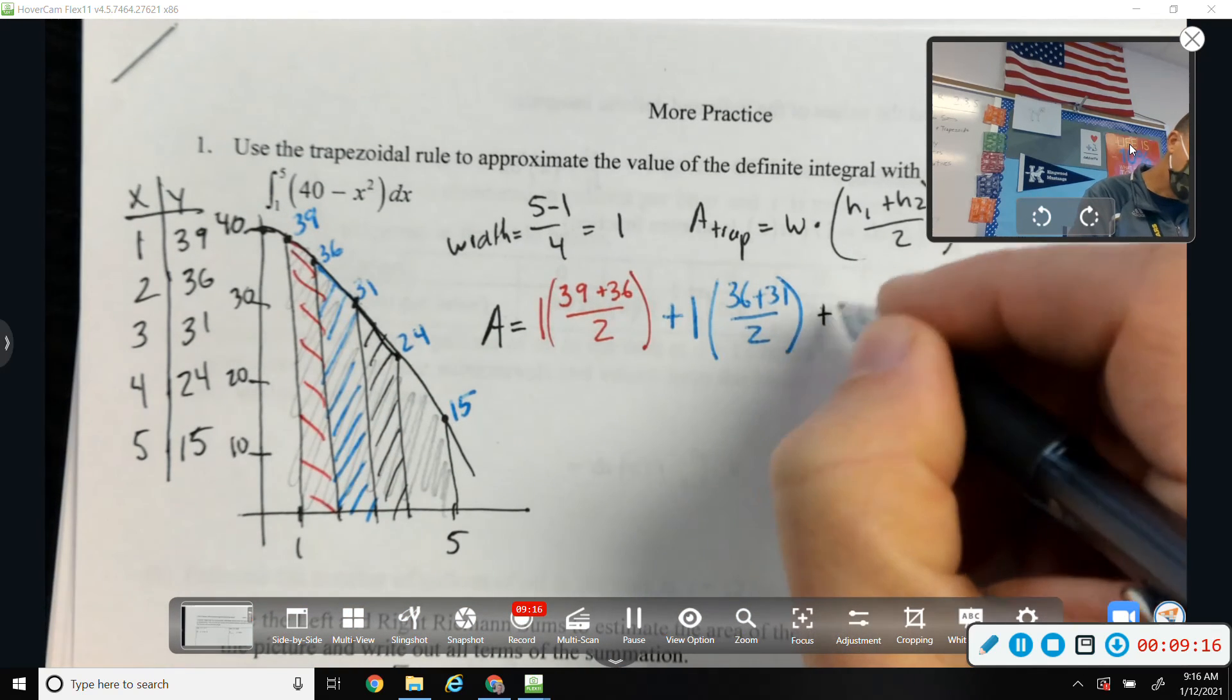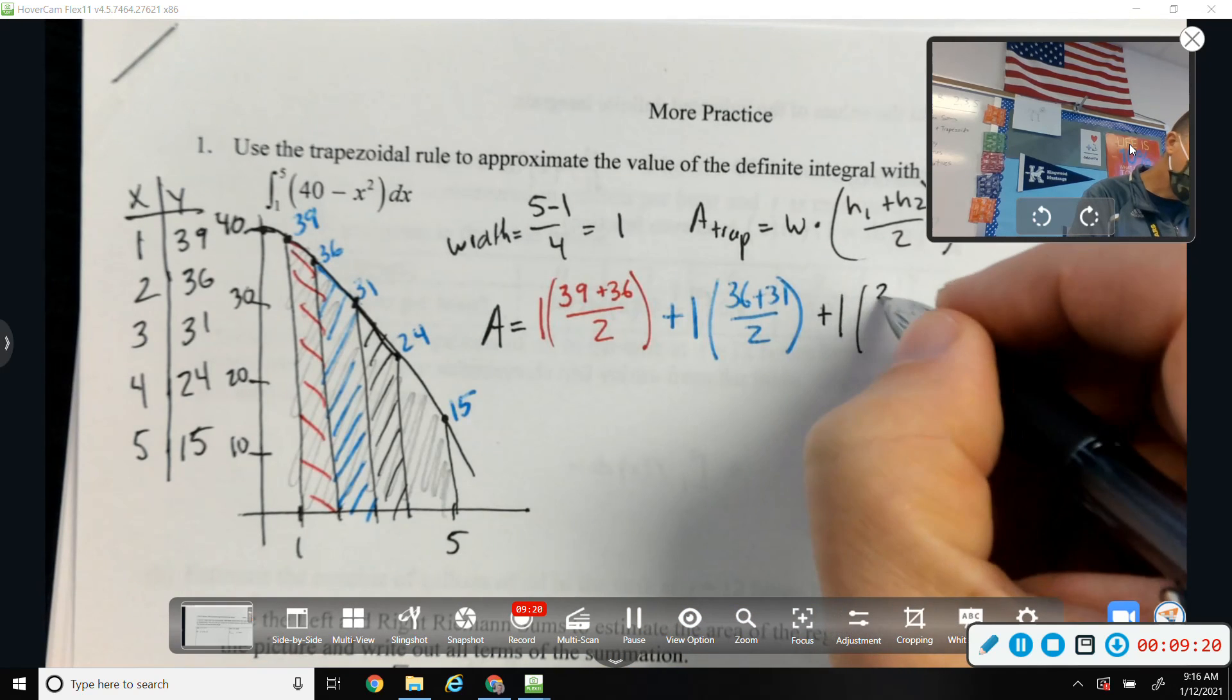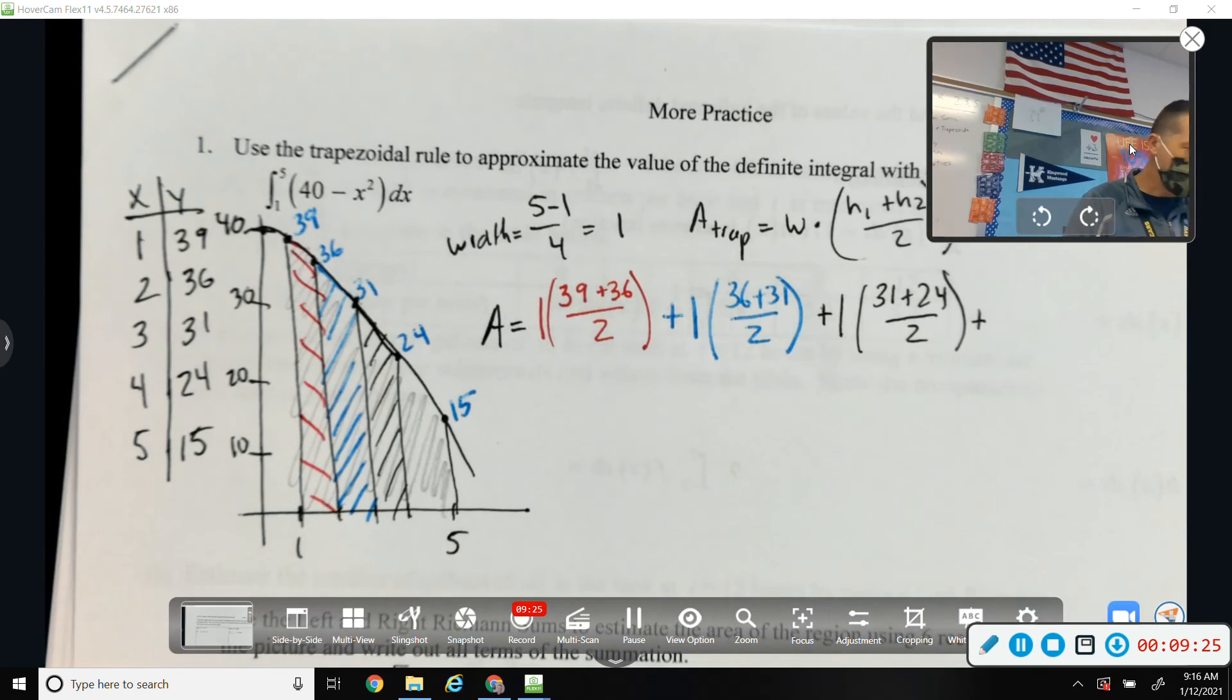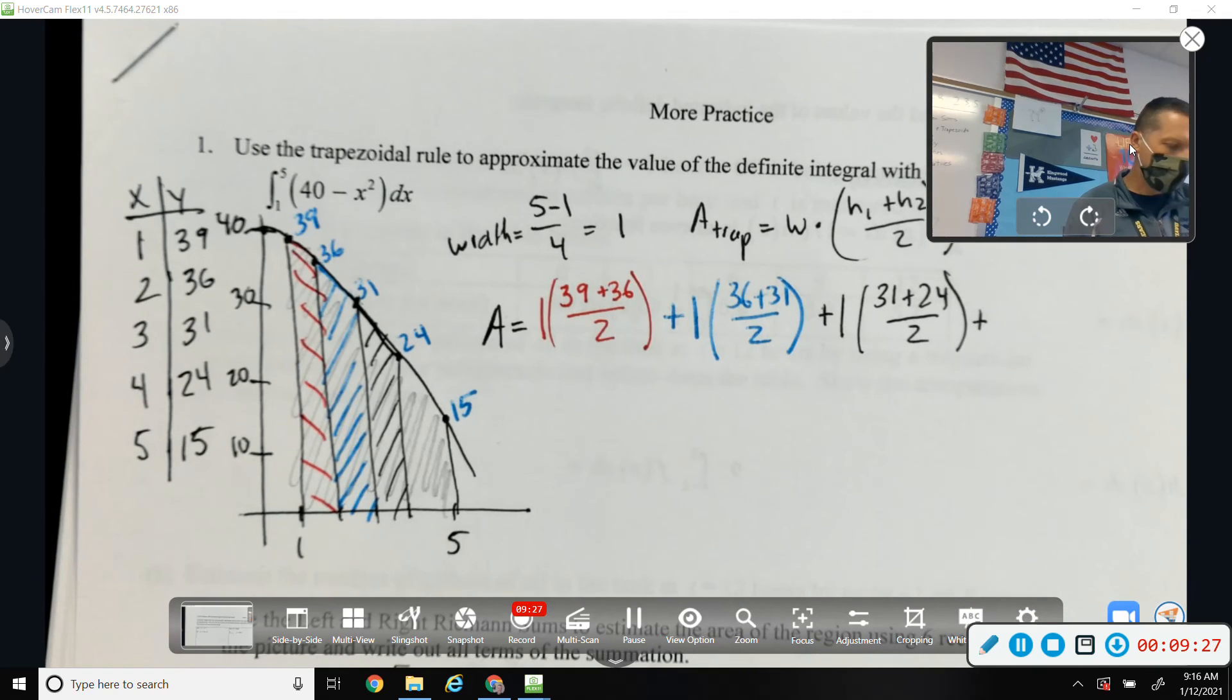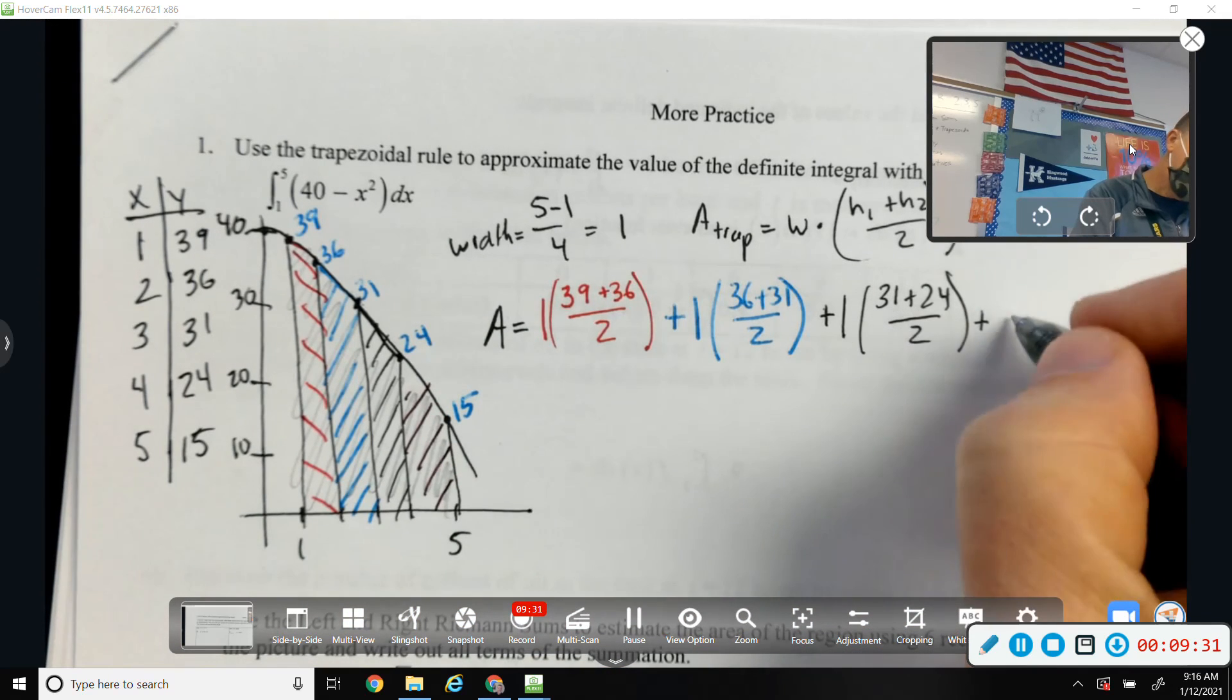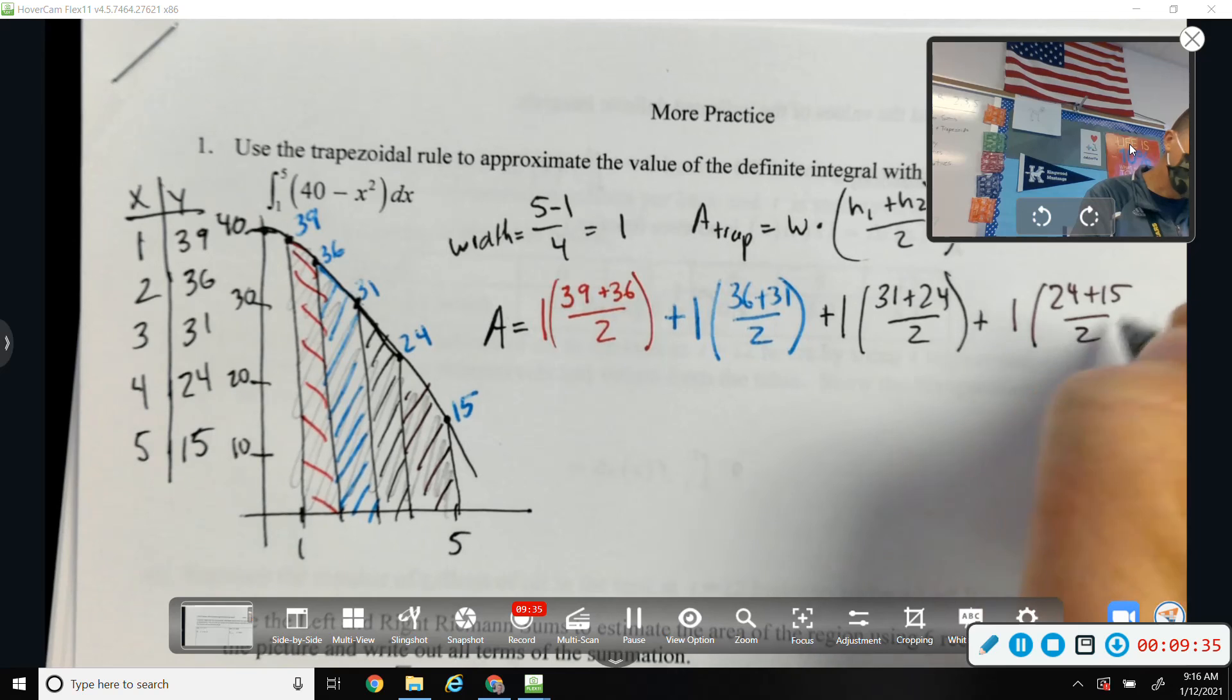Third trapezoid, 31 and 24. And then, last trapezoid. One wide. 24 and 15 are the two heights to use.